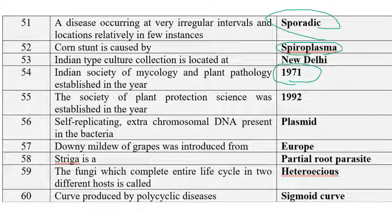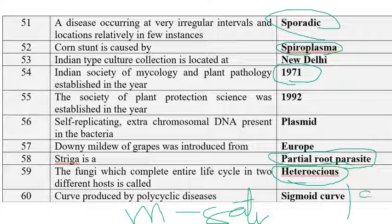Striga is a partial root parasite. Fungi which complete their entire life cycle in two different hosts are called heteroecious — the best example is wheat stem rust, which requires wheat and barberry as hosts. The curve produced by polycyclic disease is a sigmoid or S-shaped curve. Monocyclic diseases produce a saturation curve, while polyetic diseases produce a bimodal curve.